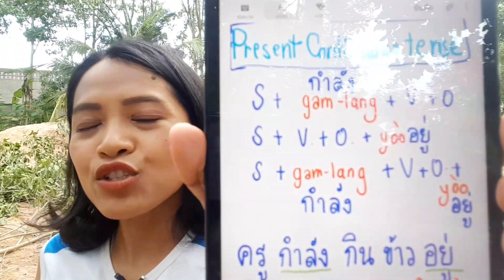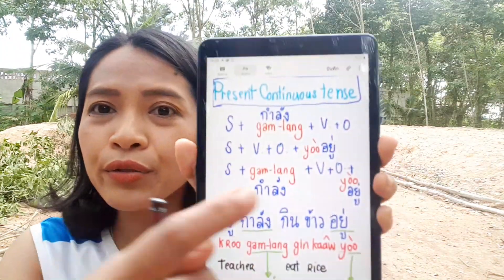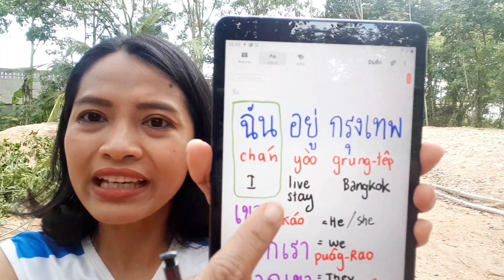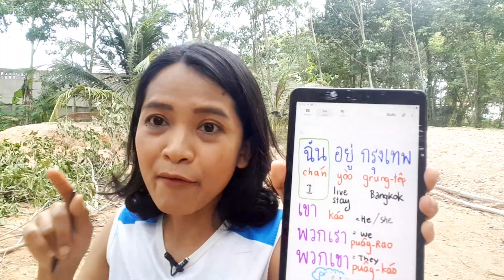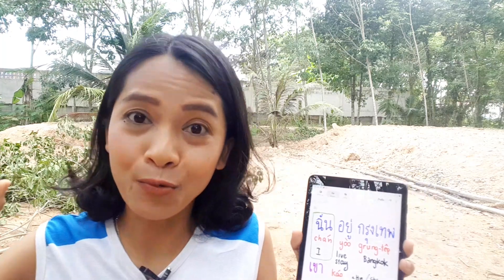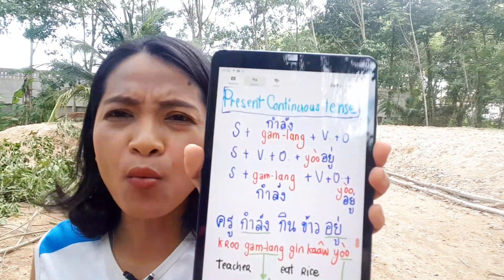You might ask whether the word yuu at the end is the same as yuu meaning 'to live/be at a location.' Yes, it is the same word. In Thai we don't have many words, so the same word used in different positions in a sentence changes its meaning. Do not be confused — it is exactly the same tone and word.